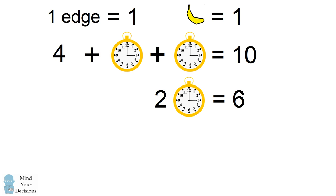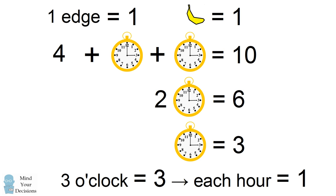When we take 10 minus 4 we get 6. So we have two clocks showing 3 o'clock that's equal to 6. We can simplify that one clock showing 3 o'clock is equal to 3. Now since 3 o'clock is equal to 3, that would suggest that each hour is equal to 1.